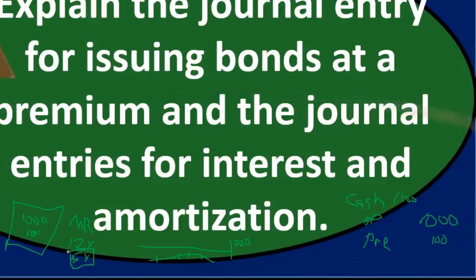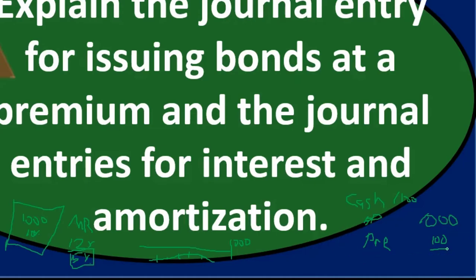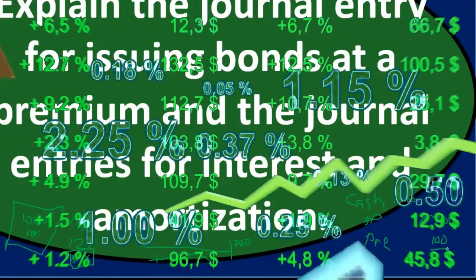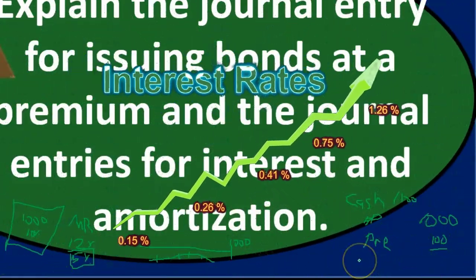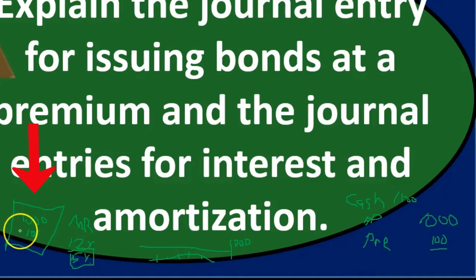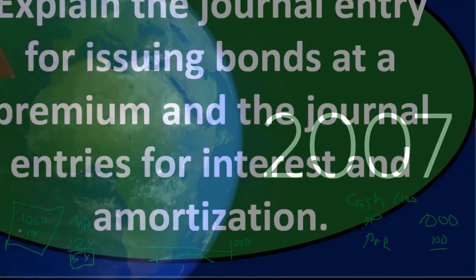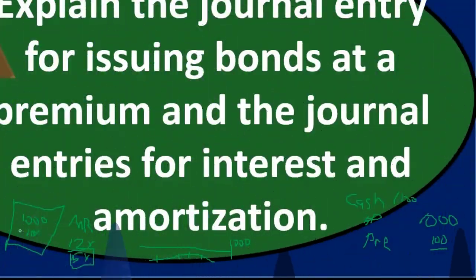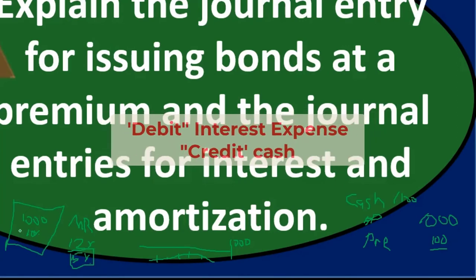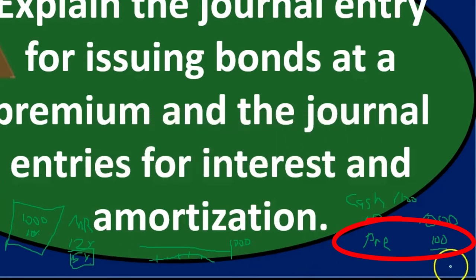Now we have a $100 premium credit on the books, and we need to amortize it over the life of the bond. Throughout each period, we'll record interest expense by debiting interest expense and crediting cash for the face amount times the stated rate, adjusted for the payment period. But we also need to handle the premium amortization.